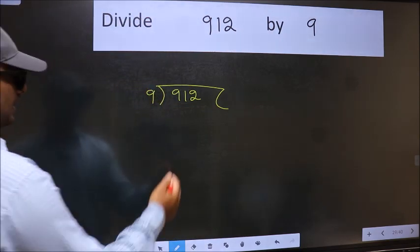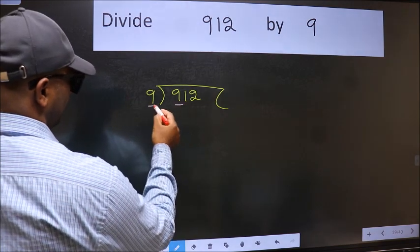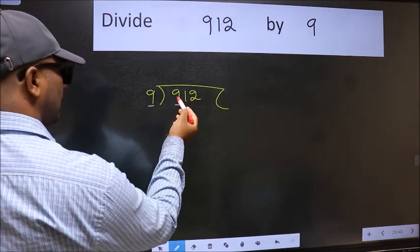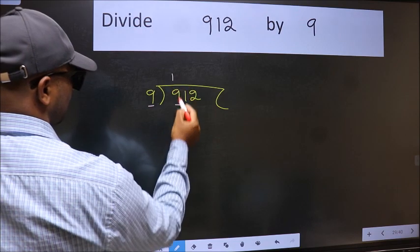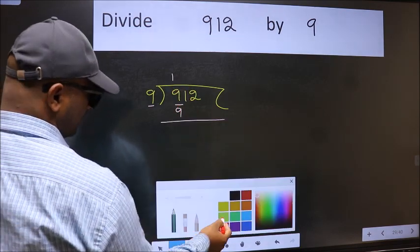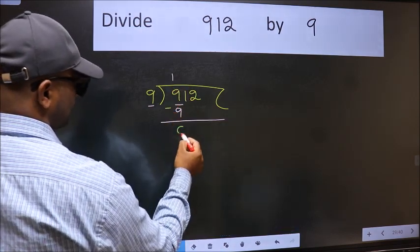Next. Here we have 9 and here 9. When do we get 9 in 9 table? 9 once 9. Now we should subtract. We get 0.